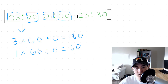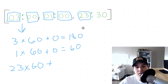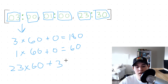And finally, we have 23 hours. So 23 times 60 plus 30 minutes equals 1410.